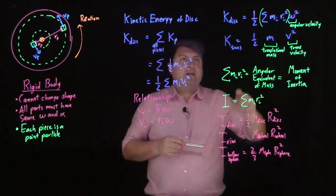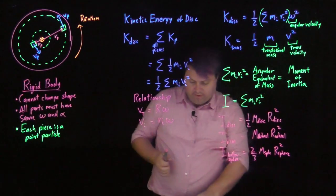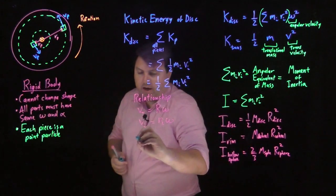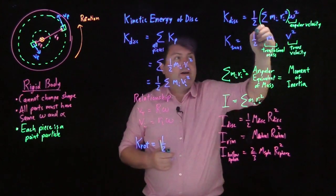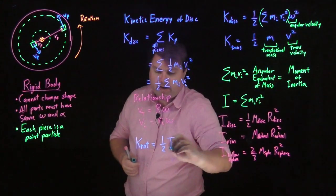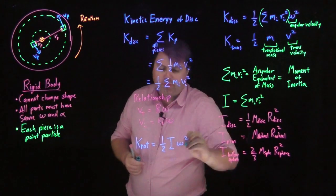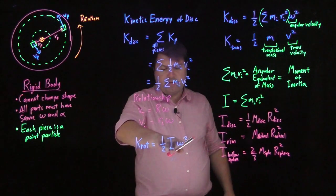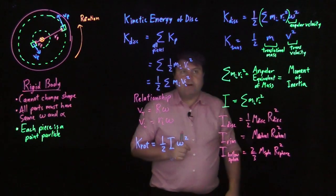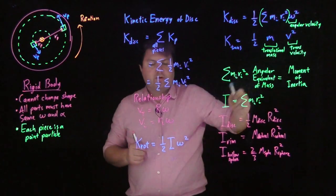But this is how we get the kinetic energy of a rotating object: one-half—instead of writing all this, I can just write I—and then I can write omega squared. So this is one-half the angular equivalent of mass, the angular velocity squared, very similar to how it works for translation.